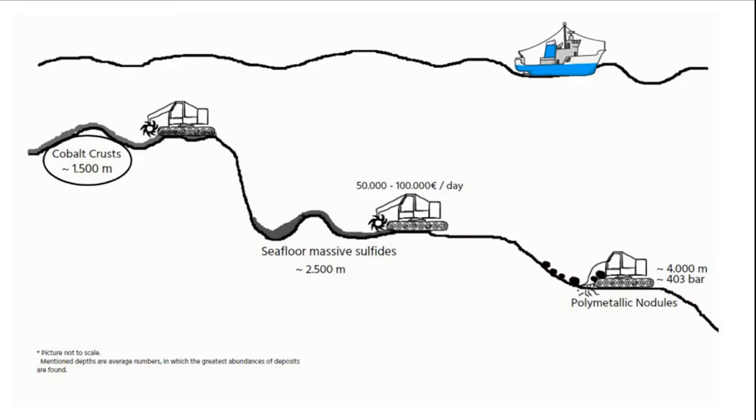To bring the ore to the surface, two main vertical transport systems have been developed as part of various research and exploration projects. The support vessel lowers a tube-shaped riser down to the ROV: the airlift system and the hydraulic system. The deeper the deposits, the more complex the vertical transport system.